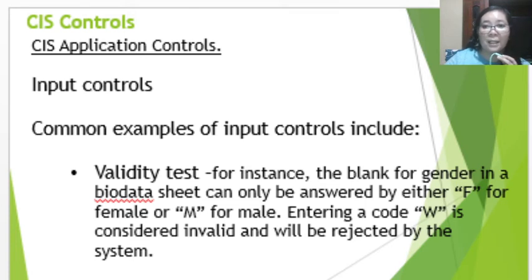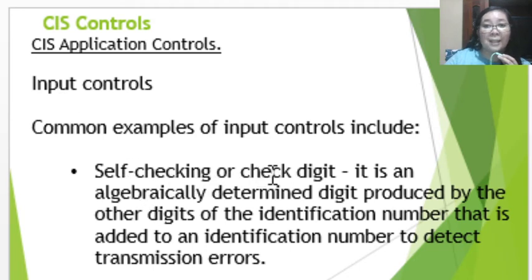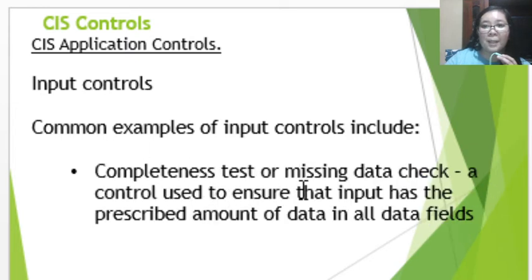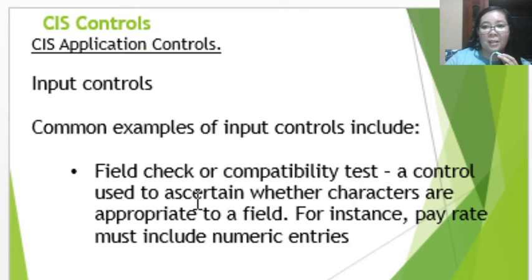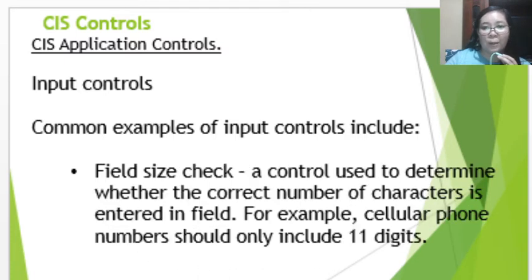For example, a blank for gender in a bio-data form can only be answered with F for female or M for male. If you enter the code W, it will be considered invalid and rejected by the system. Another input control is the self-checking or check digit — an algebraically determined digit produced by the other digits of an identification number, added to detect transmission errors. Another is the completeness test or missing data check, used to ensure that input has a prescribed amount of data in all data fields. The field check or compatibility check test ascertains whether characters are appropriate to a field — for example, pay rate must include numeric entries.